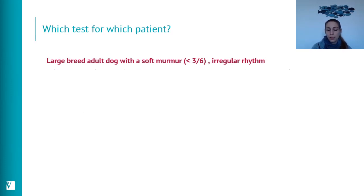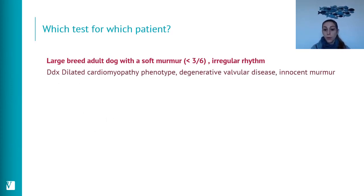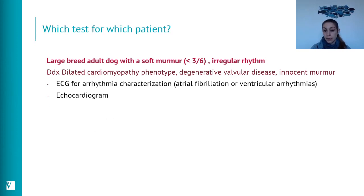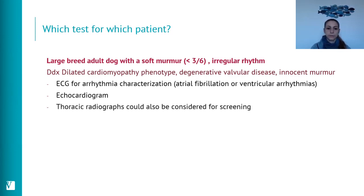Scenario 6: a large breed dog with a soft murmur and an irregular rhythm. Differentials include dilated cardiomyopathy, degenerative valvular disease, or an innocent murmur with concurrent atrial fibrillation. An ECG is needed to characterize the arrhythmia, and echocardiography is the best diagnostic step given the limitations of radiographs in detecting preclinical DCM in large breeds.